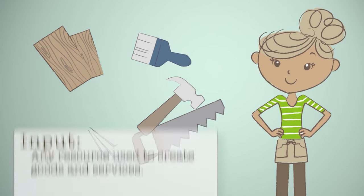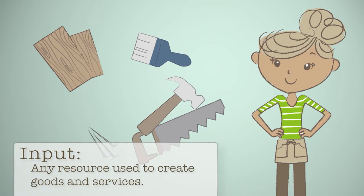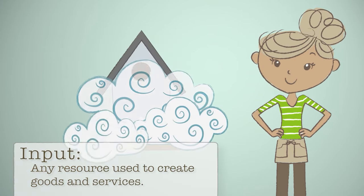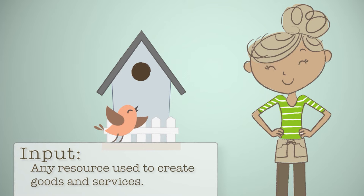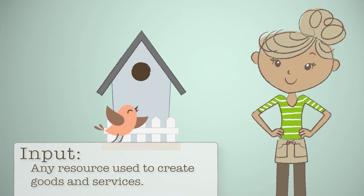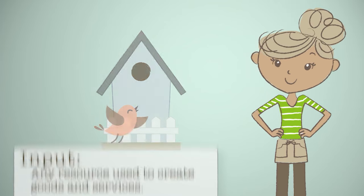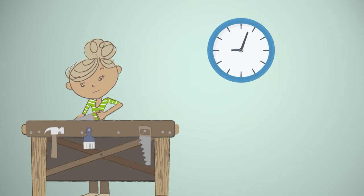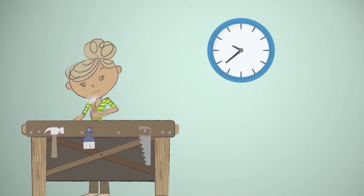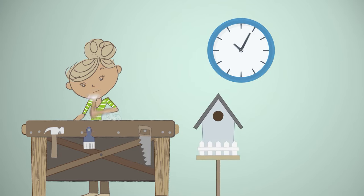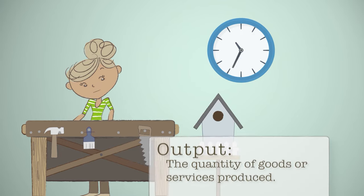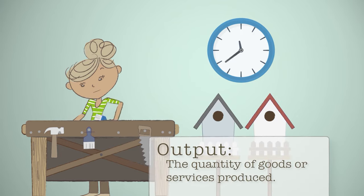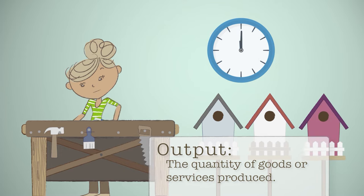An input is any resource used to create goods and services. It takes Beth one hour to make each birdhouse. The completed birdhouses are her output. Output is the quantity of goods or services produced.